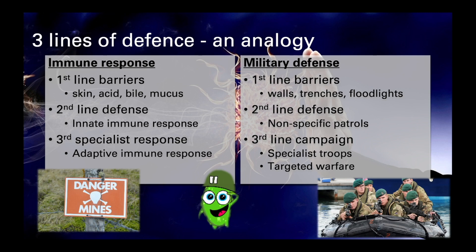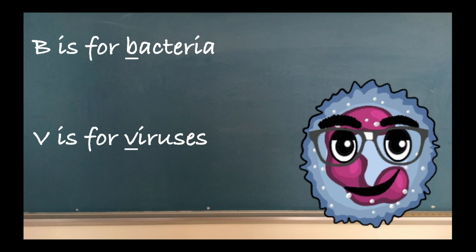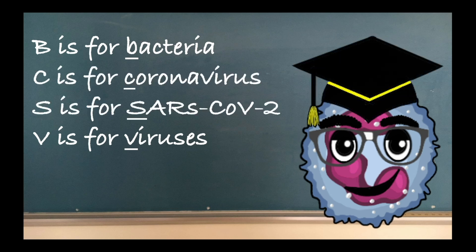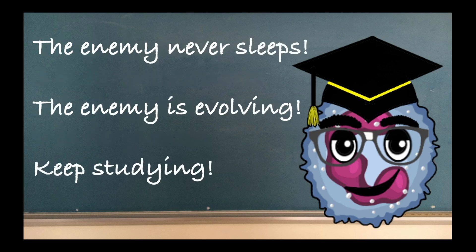The immune system is intelligent. It knows how to respond to different types of threat. There is no point, for example, mounting an effective antibacterial defence if the invading pathogen is viral or fungal. Furthermore, the immune system is continually learning, and as new threats are encountered, it adapts to meet and destroy these challenges, which is why we were able to defend ourselves against novel diseases such as COVID-19, which is caused by the previously unseen SARS-CoV-2 virus. The evolution of the immune system is driven by the evolution of pathogens and the need to respond and adapt quickly to maintain homeostasis and our health.